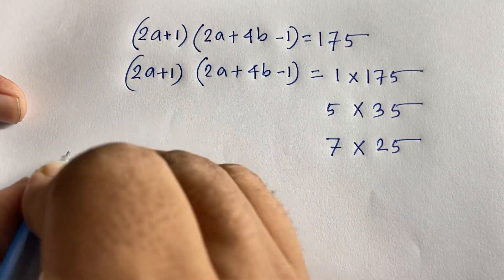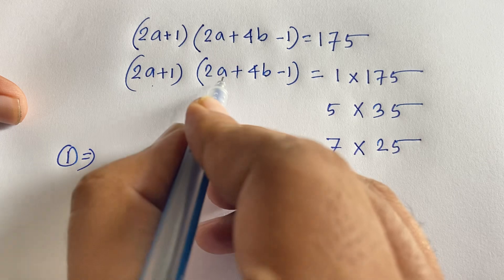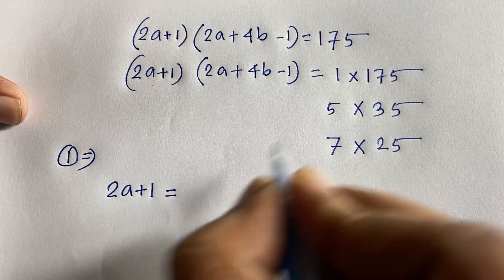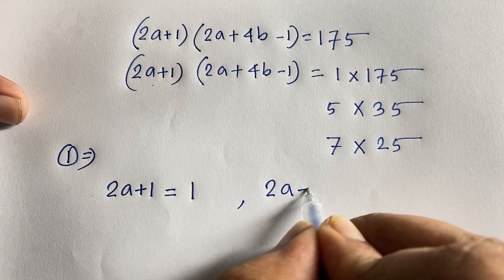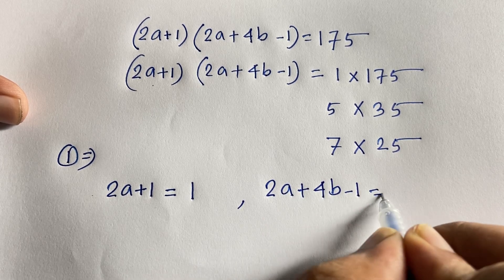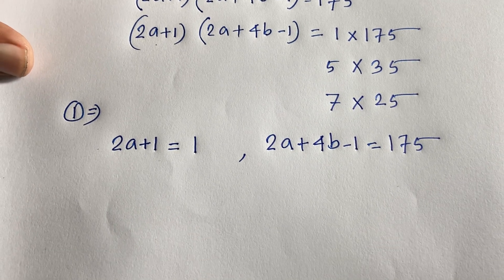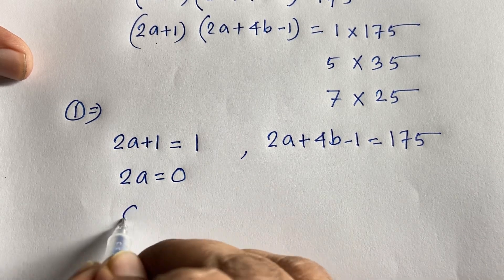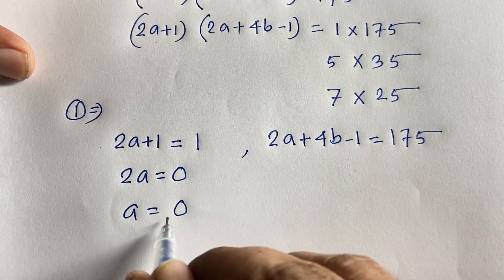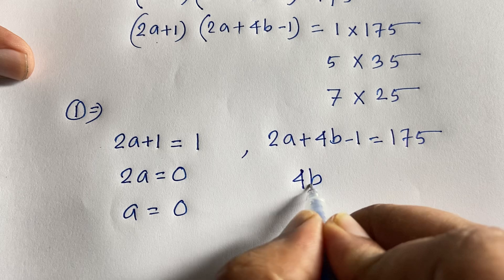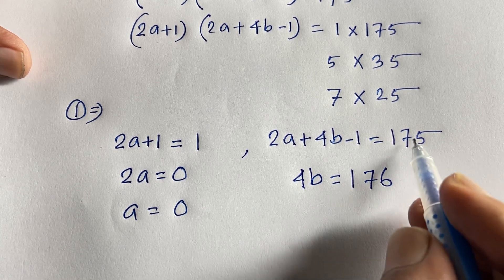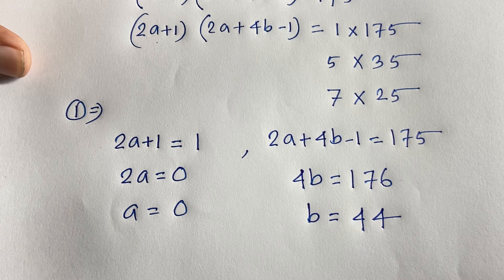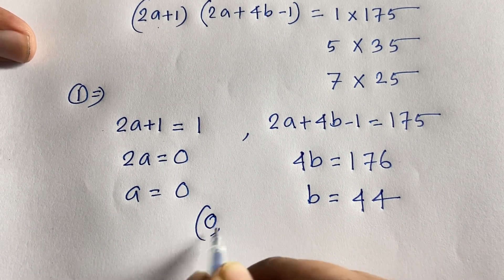First case: 2a plus 1 equals 1, and 2a plus 4b minus 1 equals 175. From the first equation, 2a equals 0, so a equals 0. Since a equals 0, we get 4b equals 176, and dividing both sides by 4 gives b equals 44. So the first solution is a equals 0, b equals 44.